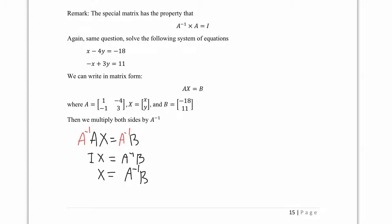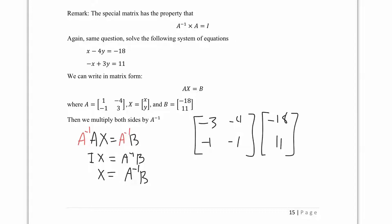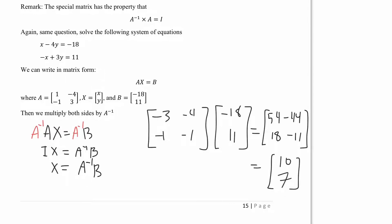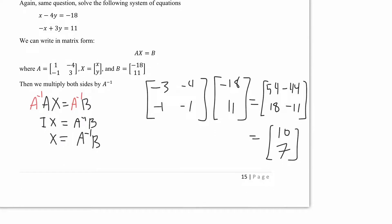We know A inverse is [-3, -4, -1, -1] and B is [-18, 11]. Multiplying: negative 3 times negative 18 is 54, minus negative 4 times 11 which is negative 44, giving 10. And 18 minus 11 gives 7. So A inverse times B equals [10, 7], confirming x equals 10 and y equals 7.